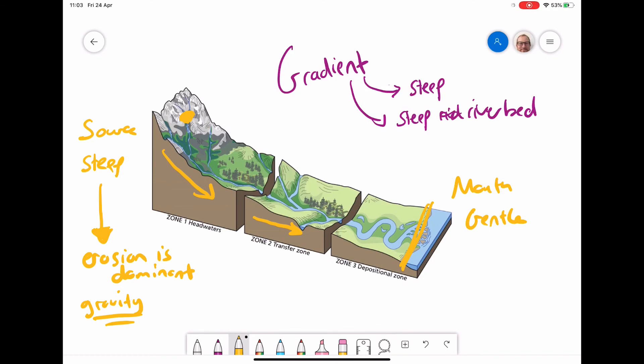By the time we get down to the mouth where it's very, very gentle in terms of the slope of the riverbed, gravity isn't pulling down as fast. Therefore, there's less energy to erode, and so we get deposition happening in this area. So over the course of river from source to mouth, the gradient will change and that will affect the process that is dominant. When we have gentle slopes, we have deposition. And when we have steep slopes, we have erosion and more transportation.